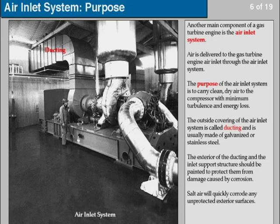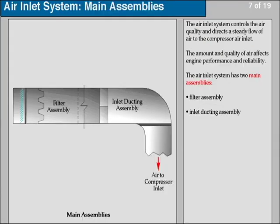The exterior of the ducting and the inlet support structure should be painted to protect them from damage caused by corrosion. Salt air will quickly corrode any unprotected exterior surfaces. The air inlet system controls the air quality and directs a steady flow of air to the compressor air inlet. The amount and quality of air affect engine performance and reliability.